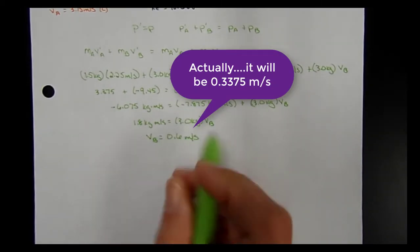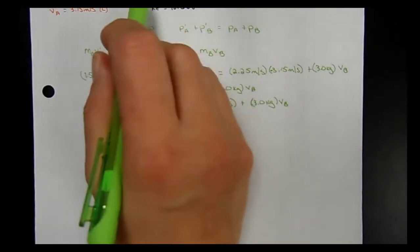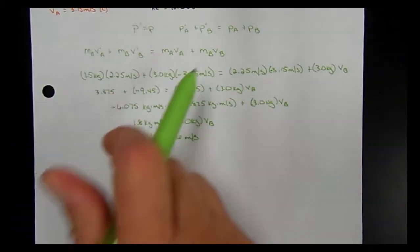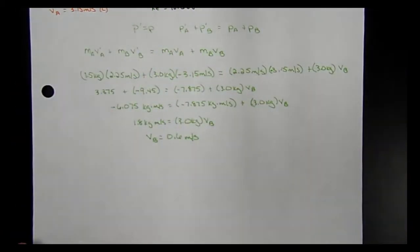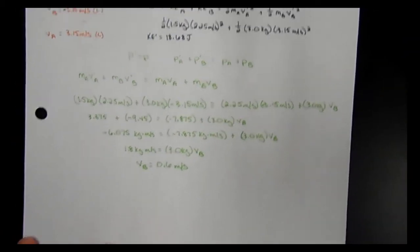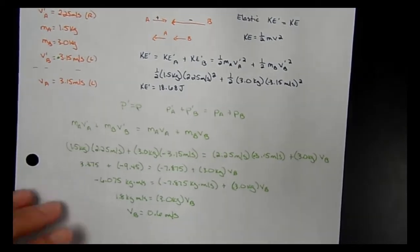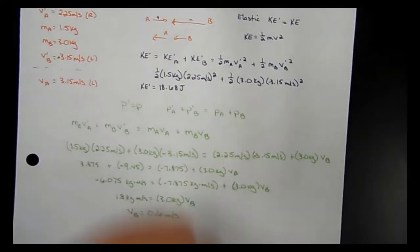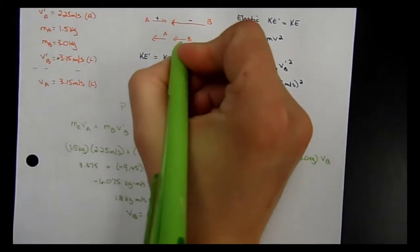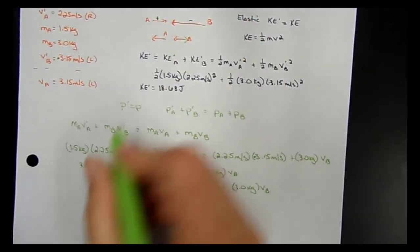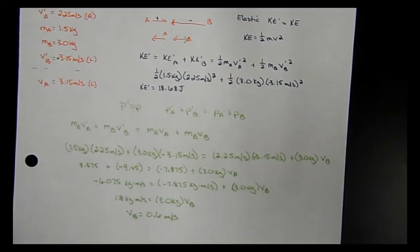That came out positive, so I was wrong — I said ball B would continue going left, but it's actually going to the right at 0.6 m/s. It doesn't really matter since the math tells us the answer.